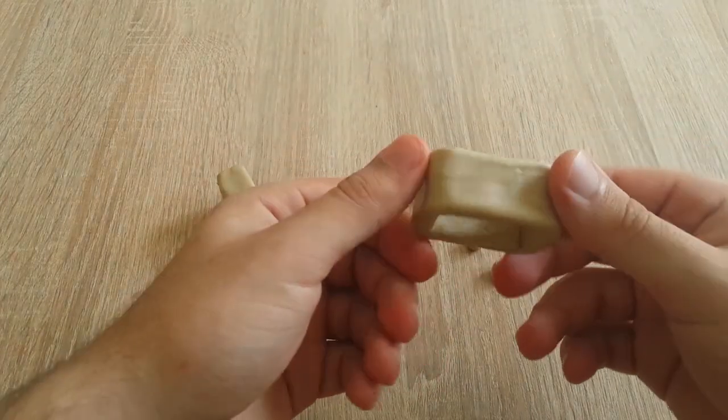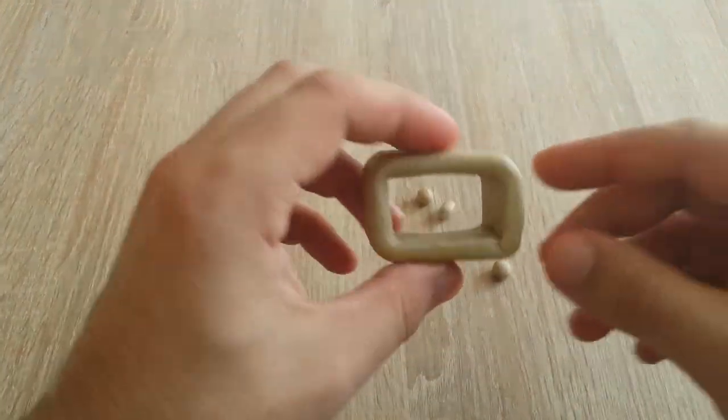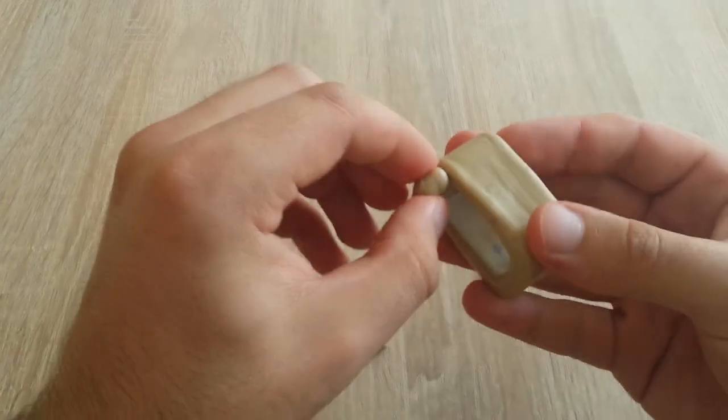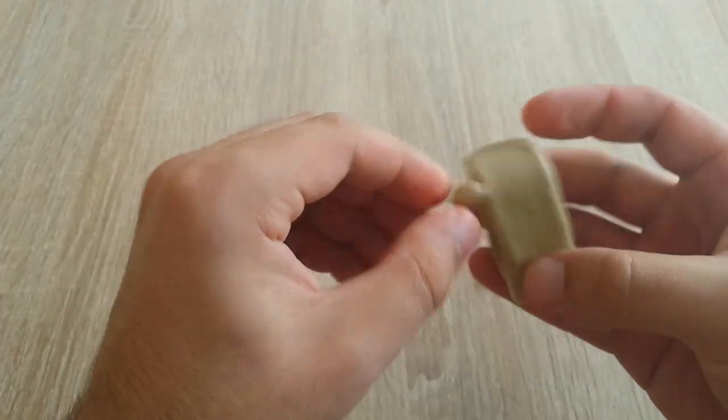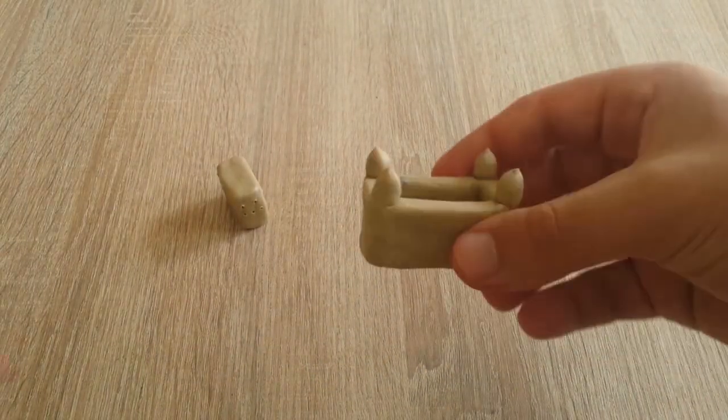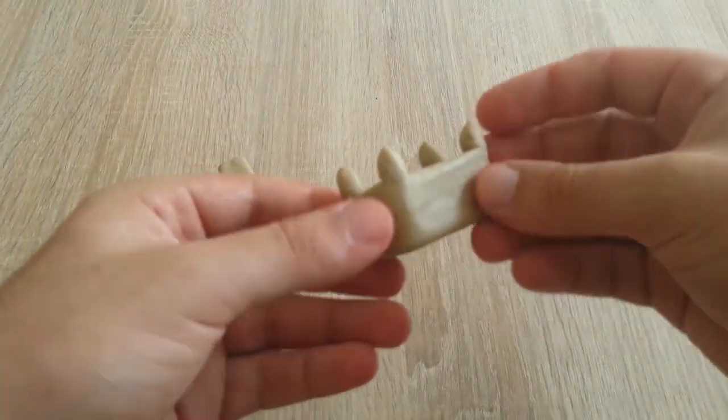So the castle making process is quite simple as well. We need this kind of shape rounded and attached together and four small towers which are going to be in the corners of the wall of the castle.